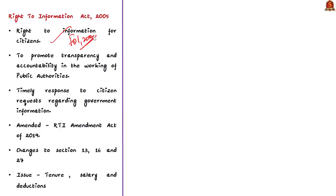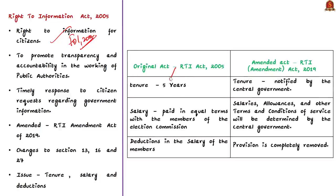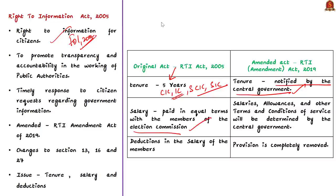The RTI Act of 2005 was amended by the RTI Amendment Act of 2019. The amendments dealt with the tenure and salary of the Chief Information Commissioner and Information Commissioners, both at central and state level. The original Act of 2005 prescribed a tenure of five years for CIC and ICs. But the amendment removed this, stating that term of office for CIC and IC at both central and state levels will be notified by the central government.